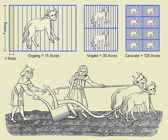In India, residential plots are measured in square feet while agricultural land is measured in acres. In Sri Lanka, the division of an acre into 160 perches or four roods is common. In Sindh, residential plots as well as open agriculture land measurement is in acres, Jarrab, Wiswa, and Gunta.